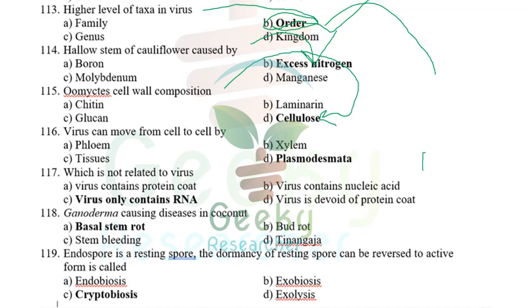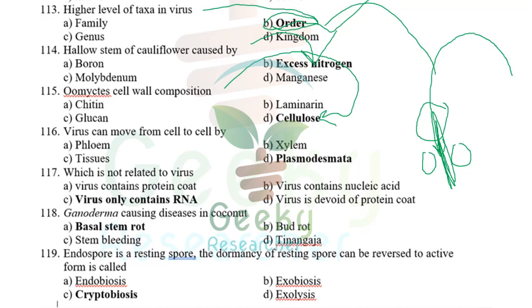Virus moves from cell to cell by plasmodesmata. The virus is larger than the plasmodesmata gap, so it produces a movement protein to facilitate movement. This allows the virus to move from one cell to another efficiently through plasmodesmata.